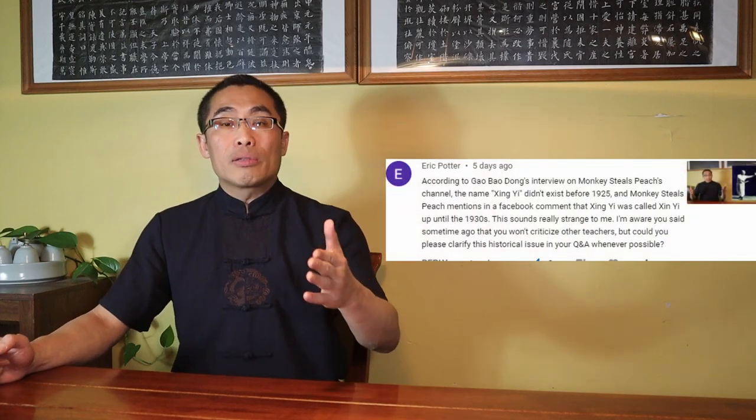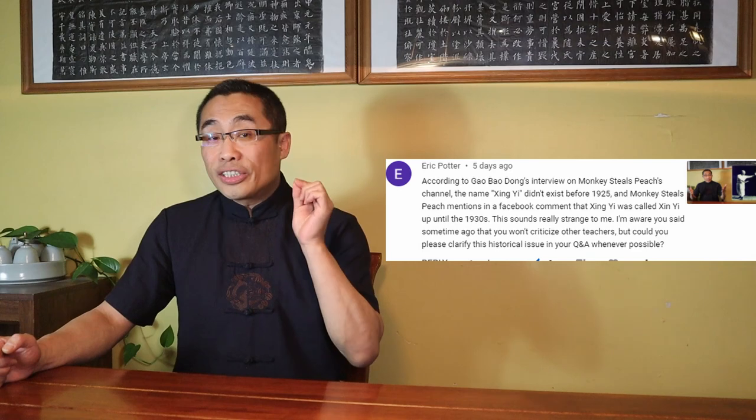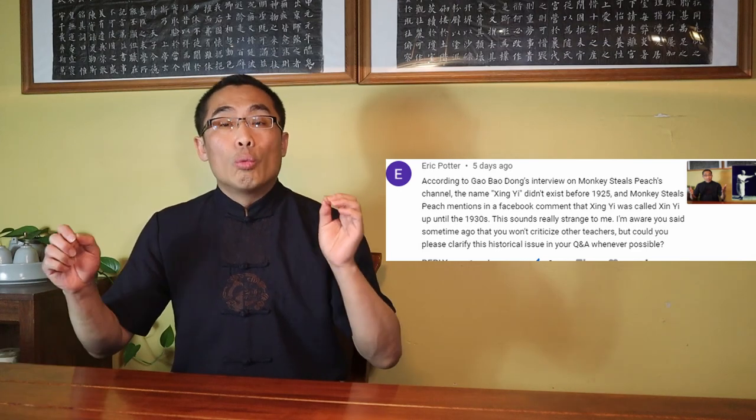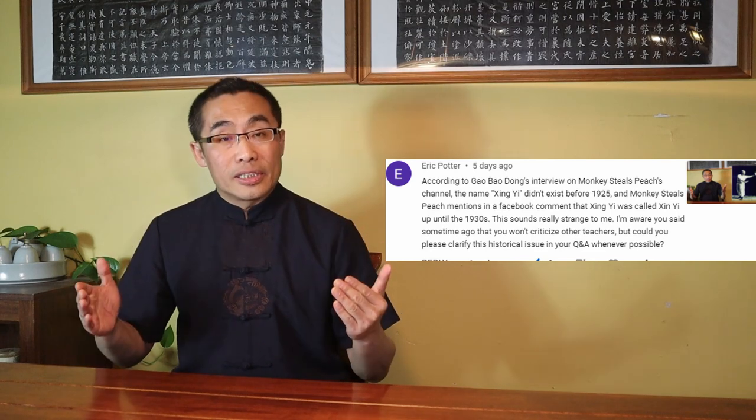Now, let's talk about your second question about someone claiming Xing Yi with a G was known as Xin Yi without a G until the 1930s. Xing Yi as the name of the style has been used much earlier than the 1930s. For example, Liu Dianchen and Sun Lutang both published books and used Xing Yi as the book's title earlier than the 1930s. Actually, Sun Lutang's book was first published in 1915, so the claim that the term Xing Yi with a G was only coined in the 1930s is a mistake.